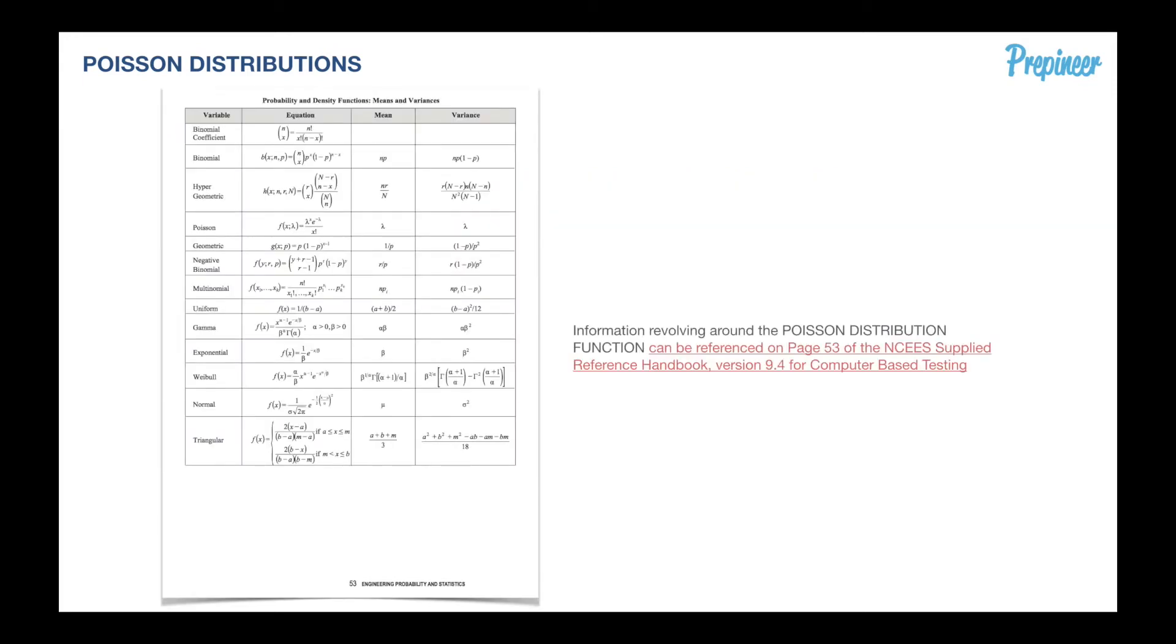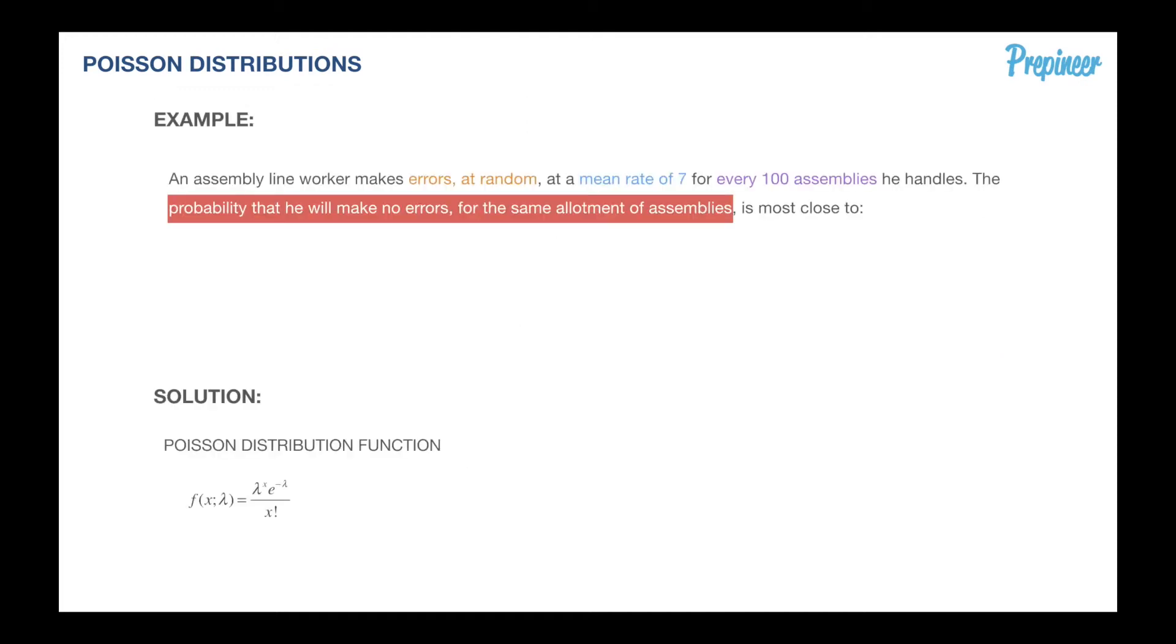Here's a page from your NCEES reference handbook. This is version 9.4 for computer-based testing. If you hone in right there on your reference handbook, you'll see that you are given the formula, the equation for the Poisson distribution. We have lambda, we have X. X is going to be your random variable and lambda is actually going to be your mean.